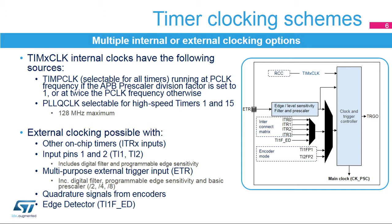Its frequency must be set so as not to exceed 128 MHz. External timer clocking makes it possible to count external events or to have a counting period externally adjusted. The clock source can be provided by other on-chip timers using one of the four internal trigger inputs named ITR0 to ITR3. Input pins 1 and 2 can also serve as external clocks with the option of including digital filters to remove spurious events. The external trigger input, named ETR, can be configured as an external clock with a digital filter, programmable edge sensitivity, and a first basic prescaler stage to reduce the frequency of incoming signals if needed.